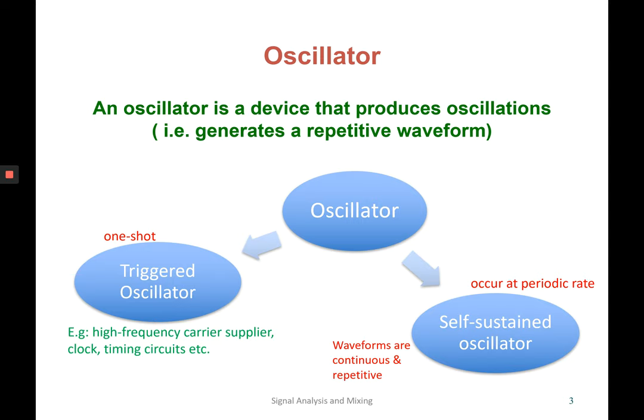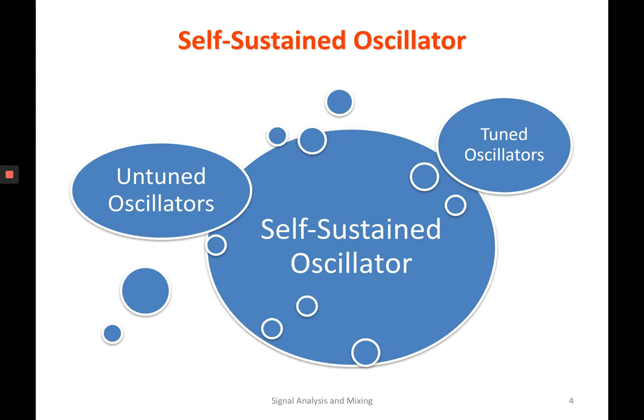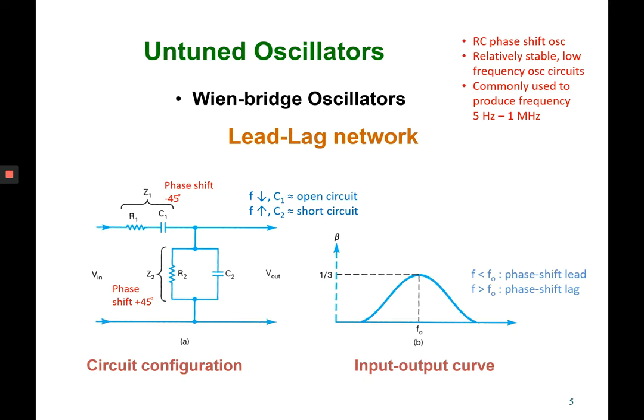In this chapter, we will learn more on the self-sustained oscillator, not the triggered one. A self-sustained oscillator can be divided into untuned and tuned oscillators. We will learn what is tuned oscillator and what is untuned oscillators. First, for the untuned oscillators, there is one oscillator named Wien Bridge.